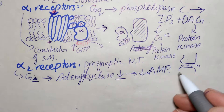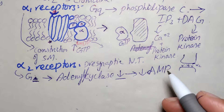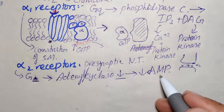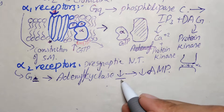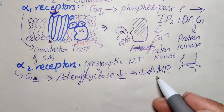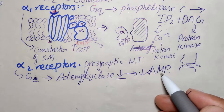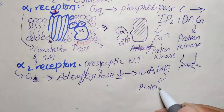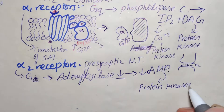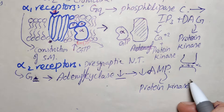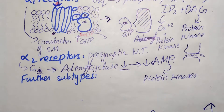Normally adenylyl cyclase causes the activation or production of cyclic AMP, but as it is now being inhibited there will be a resultant decrease in the concentration of cyclic AMP. Cyclic AMP is responsible for protein kinase activation, so this process will be inhibited.